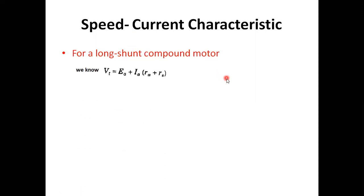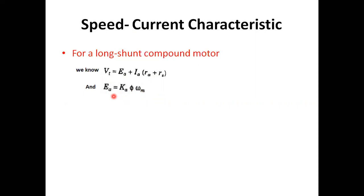For a compound motor, the voltage equation is given by: Vt = Ea + Ia(Ra + Rs), where Ia is the armature current, Ea is the EMF generated in the armature circuit, Vt is the terminal voltage, Ra is the armature resistance, and Rs is the series field resistance. We also know that the armature EMF is given by Ea = Ka × Φ × ωm, where Ka is the armature constant, Φ is the flux, and ωm is the motor speed in radians per second.